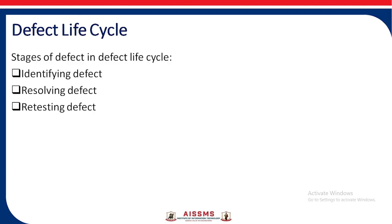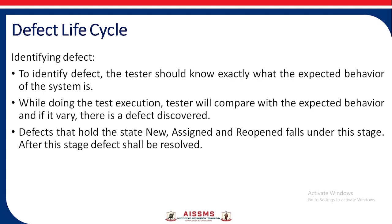The stages of the defect life cycle are: identifying the defect, resolving the defect, and retesting the defect. To identify a defect, the tester should know exactly what the expected behavior of the system is. While doing test execution, the tester compares the expected behavior and the actual behavior, and if it is varying, then the defect is discovered. The defect states new, assigned, and reopened fall under the identifying stage.